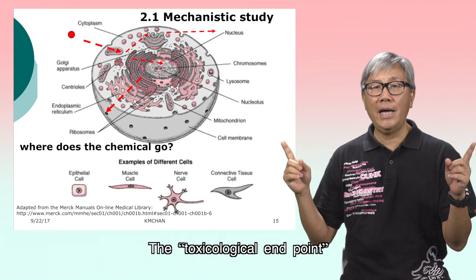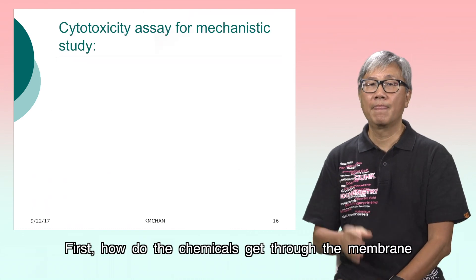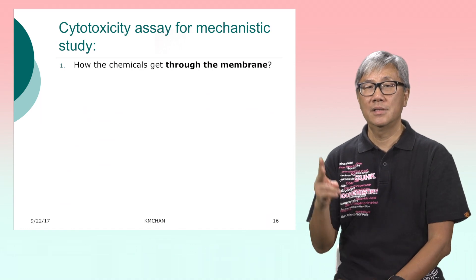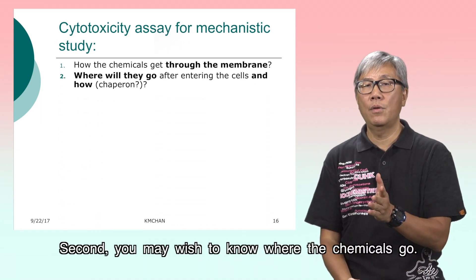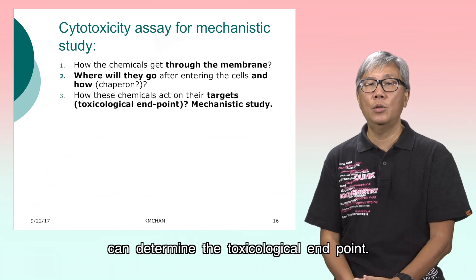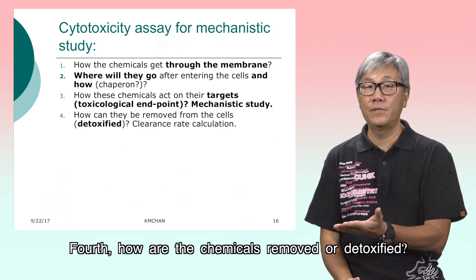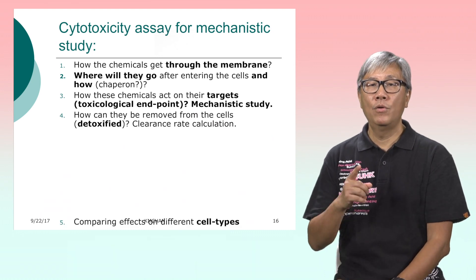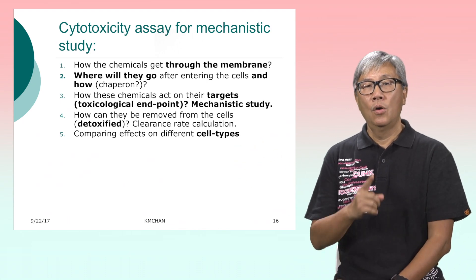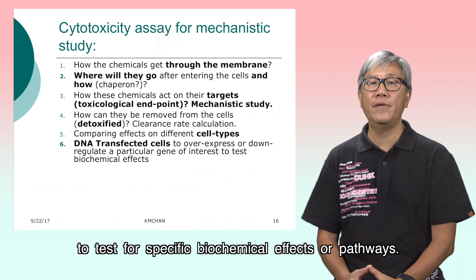The toxicological end point is what we always want to find out. First, how do the chemicals get through the membrane and enter the cells? Second, you may wish to know where the chemicals go. Third, a mechanistic study can determine the toxicological end point. Fourth, how are the chemicals removed or detoxified? We may wish to compare these processes in different cell types, and we may even transfer target toxic genes to test for specific biochemical effects or pathways.